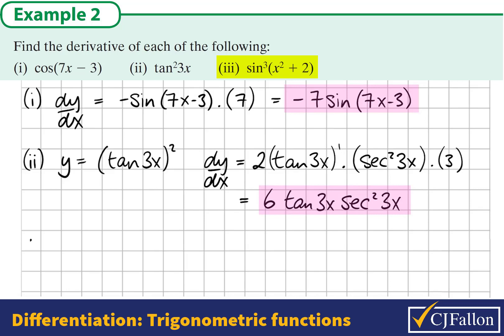In the next example we have sine cubed of the angle x squared plus 2. Again there are three layers to this because this means sine of the angle x squared plus 2 all to the power of 3. The outside layer is the power, the middle layer is the sine of the angle, and then the angle is the very inside layer.